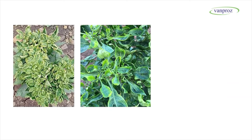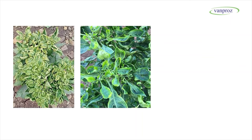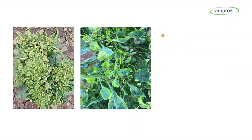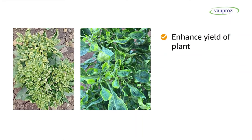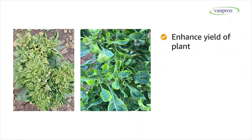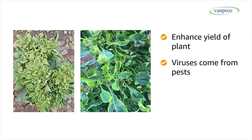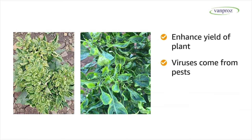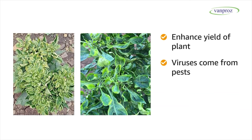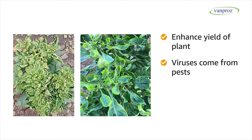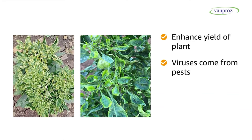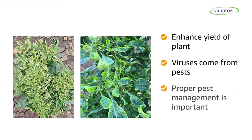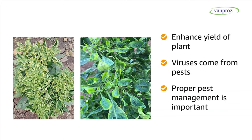V-bind not only stops viral diseases but also enhances the yield of plants. Since viruses are transmitted by pests like thrips, whiteflies, aphids, and jassids, proper pest management is important alongside V-bind.